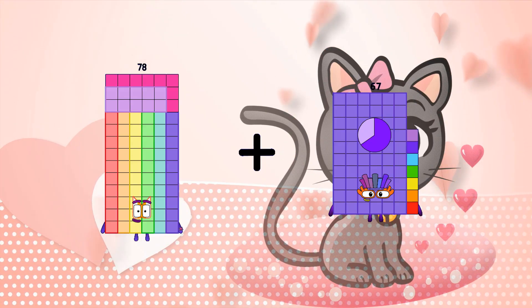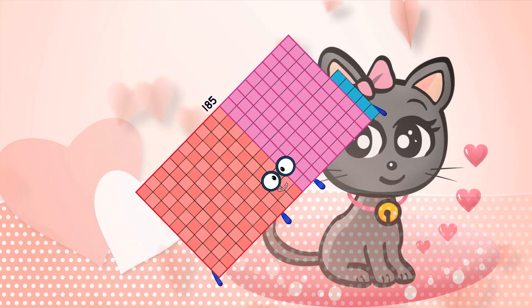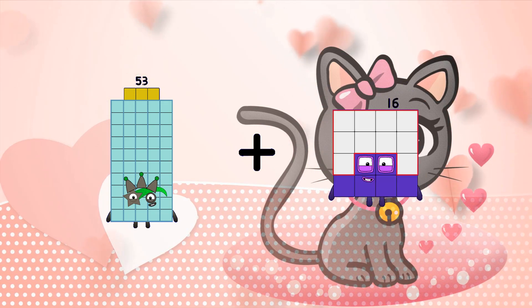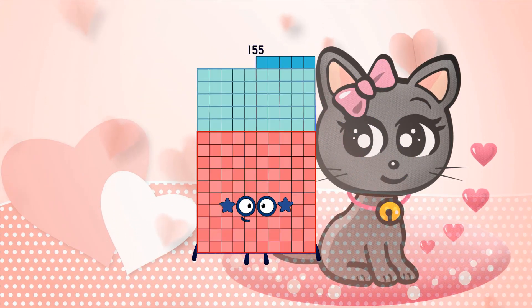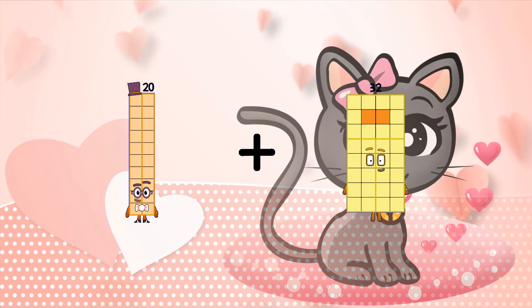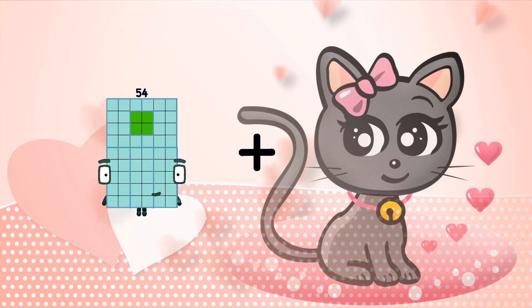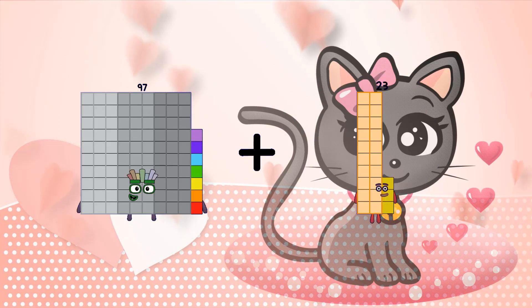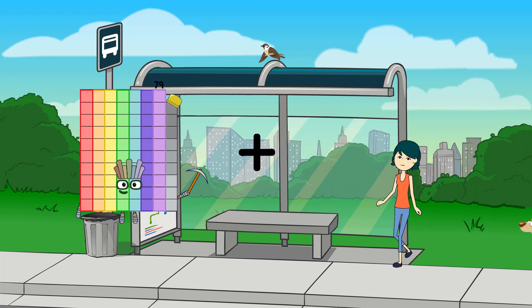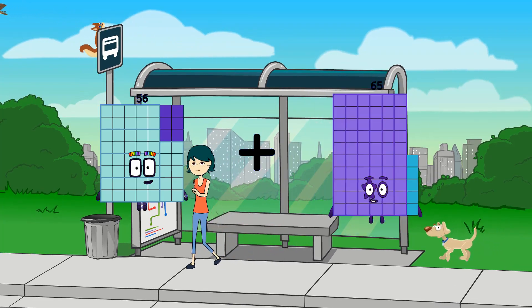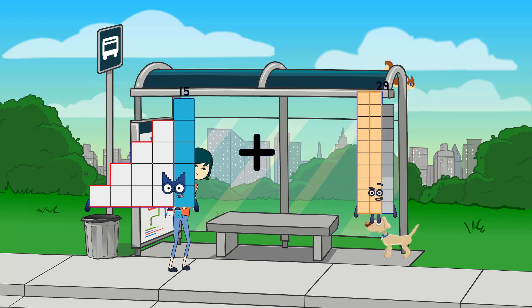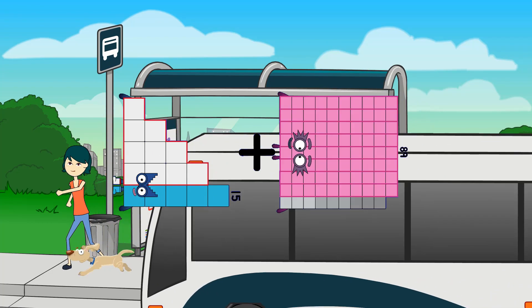78 plus 107 equals 185. 51 plus 15 equals 66. 56 plus 22 equals 78. 15 plus 89 equals 104.